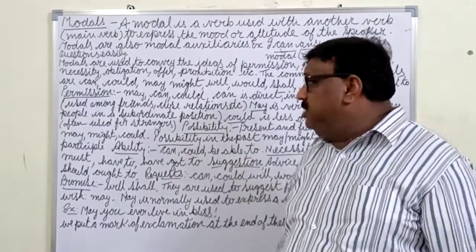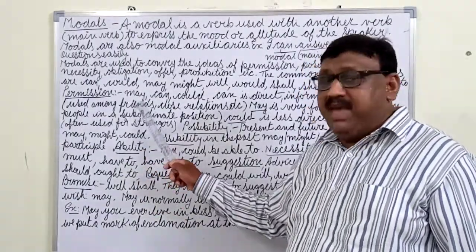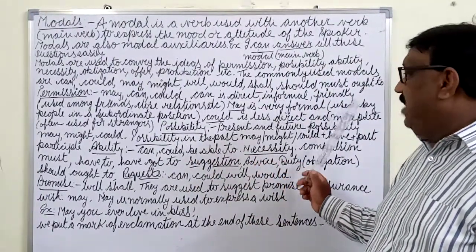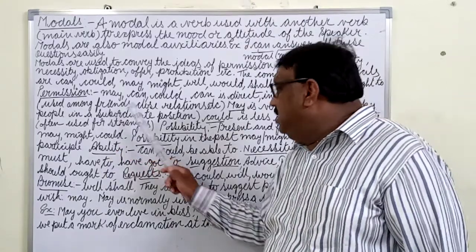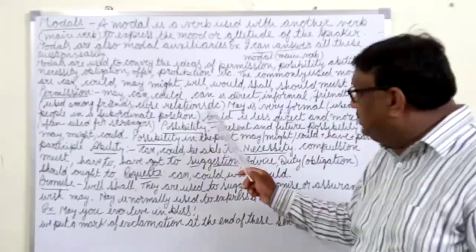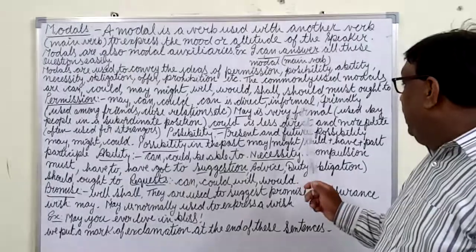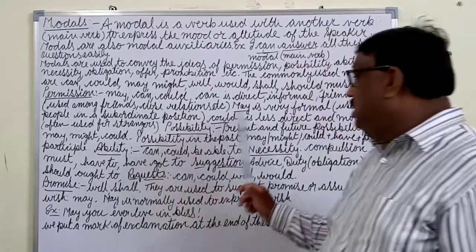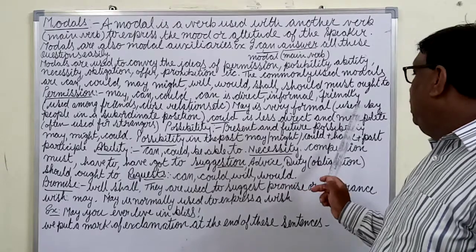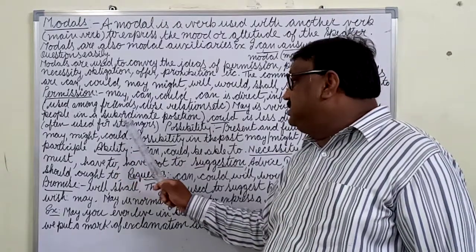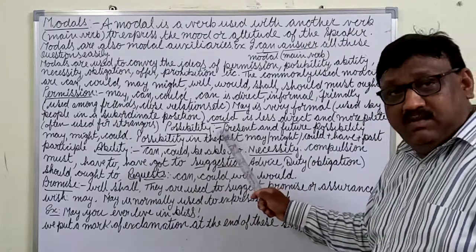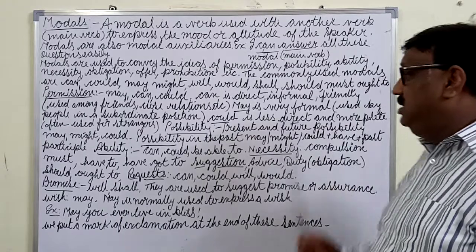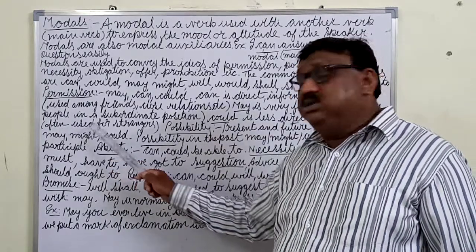Whenever we have to take permission, we use May, Can, or Could. 'Can' is direct, informal, and friendly — used among friends and close relations. 'May' is very formal, used by people in a subordinate position. 'Could' is less direct and more polite, and is often used with strangers or unknown persons.